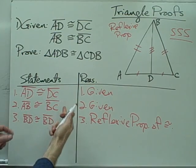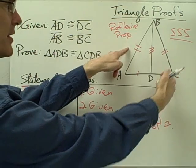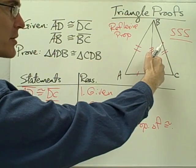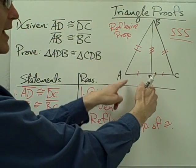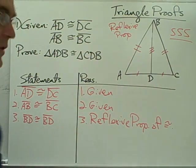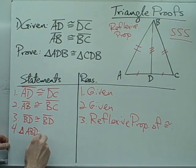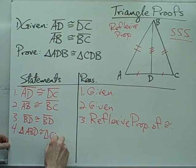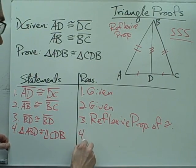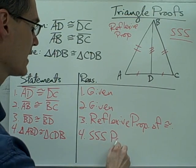Now what I have is I've shown that this segment is congruent to this segment, this segment is congruent to this segment, and this segment is congruent to itself. So I have shown that all three sides of this triangle are congruent to all three sides of this triangle, which means I can say that these two triangles — triangle ADB is congruent to triangle CDB.